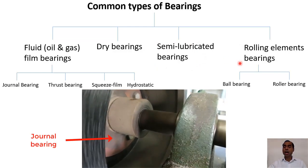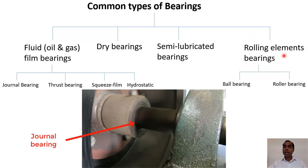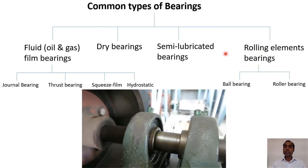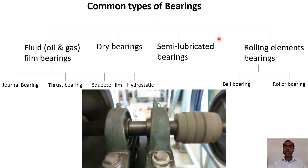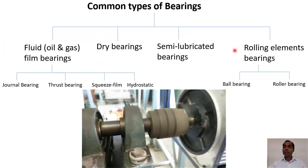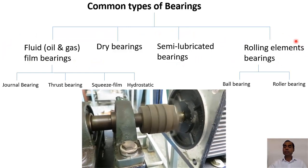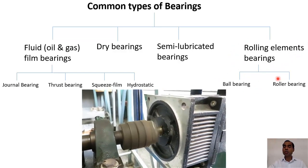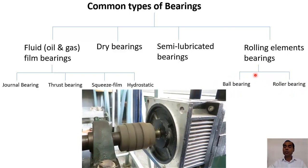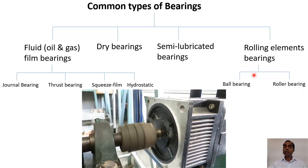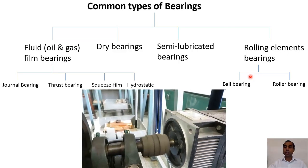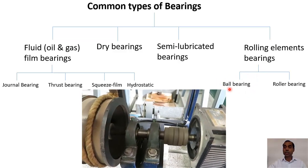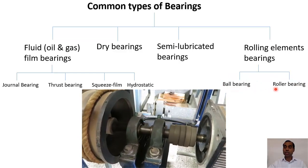The fourth type is the rolling element bearing. As we know, rolling friction is far smaller than sliding friction. The previous three types are based on sliding components, whereas the rolling element bearing uses rolling elements — either ball bearings or roller bearings. If a ball is placed between two surfaces in relative motion, rolling leads to a very low coefficient of friction. Rollers can also be used instead of balls.